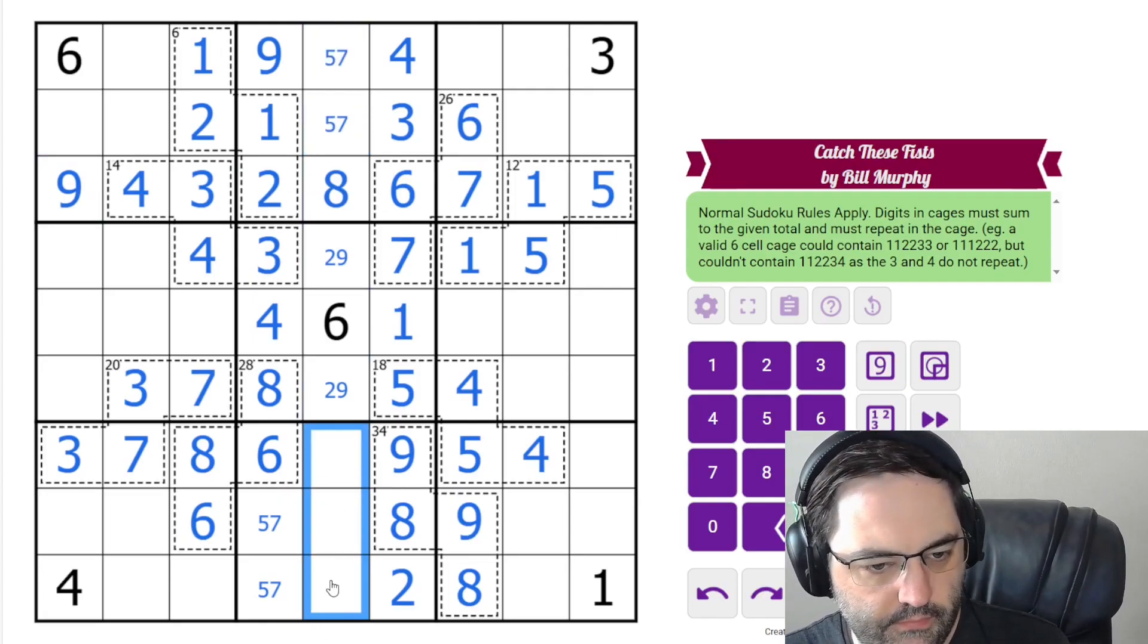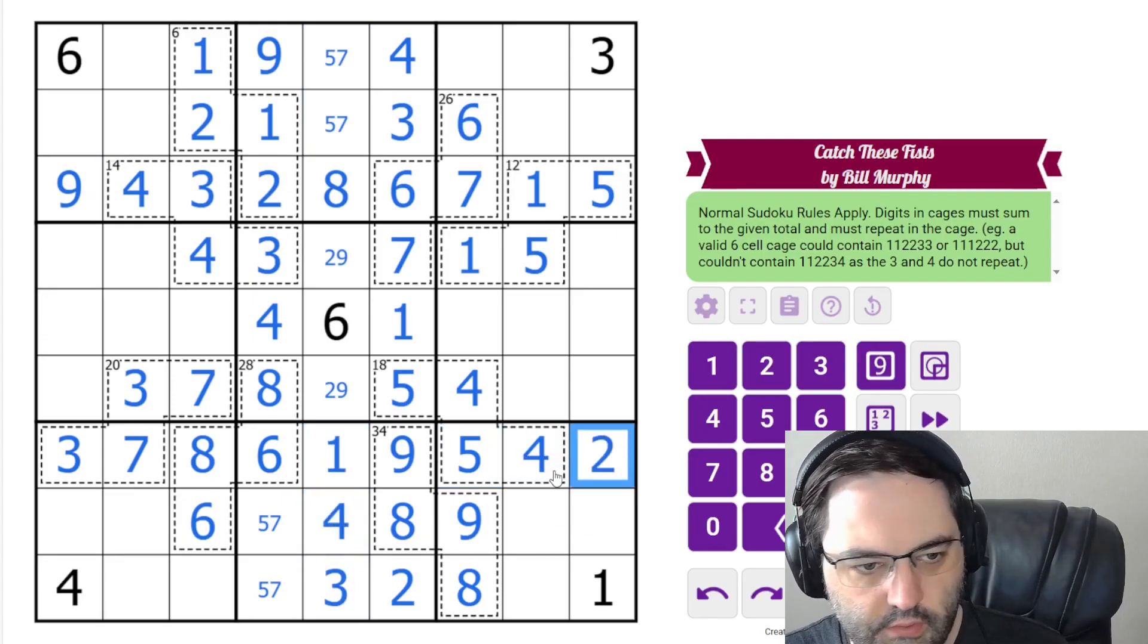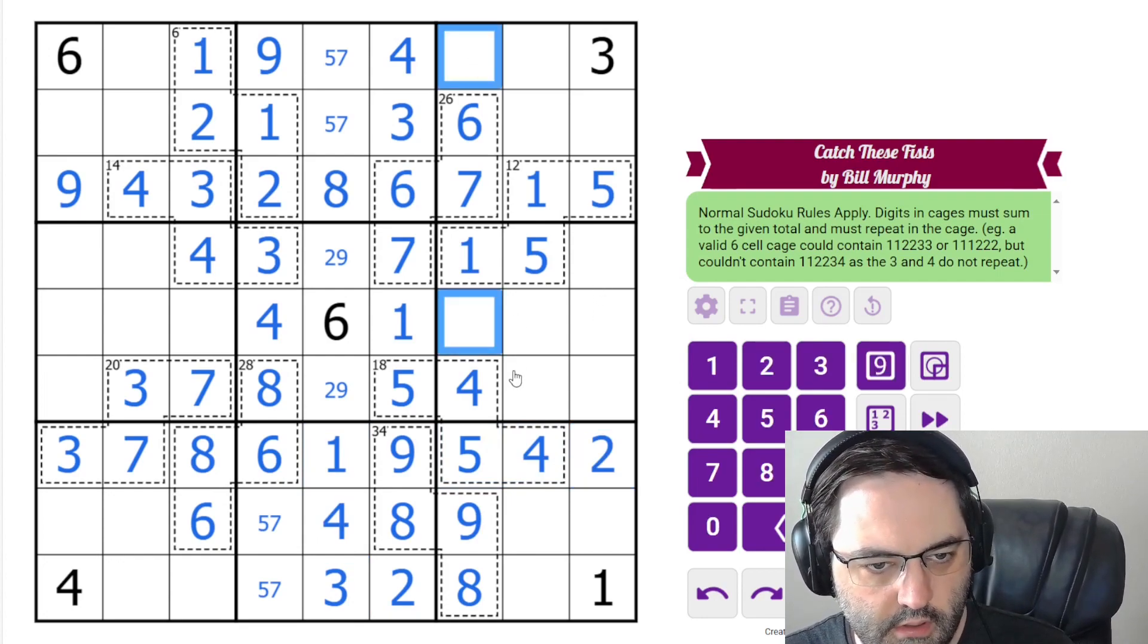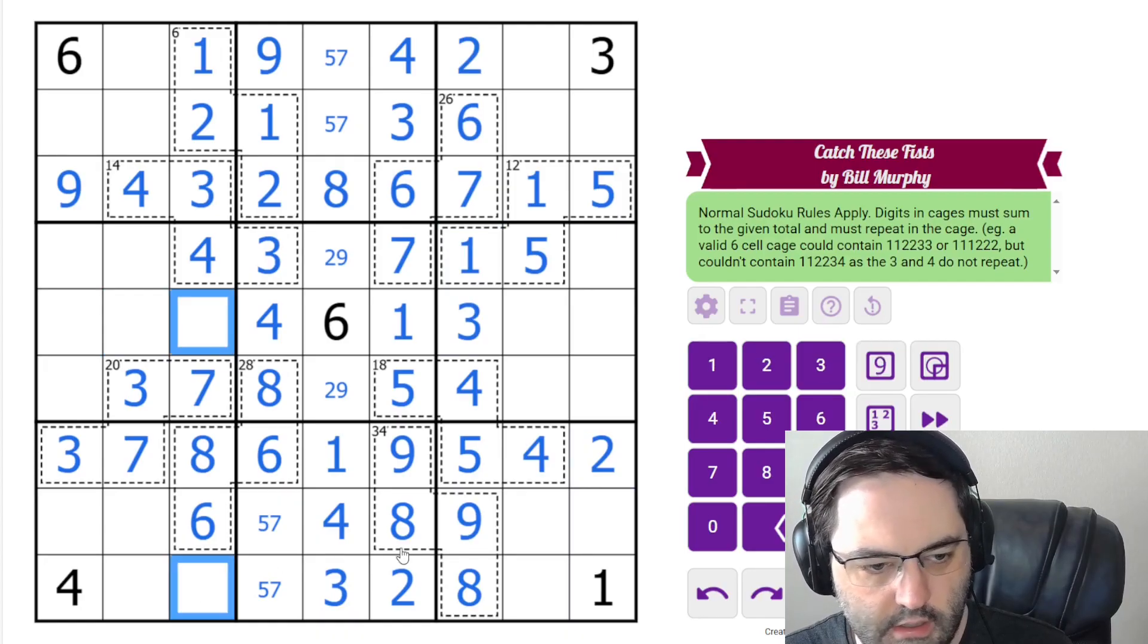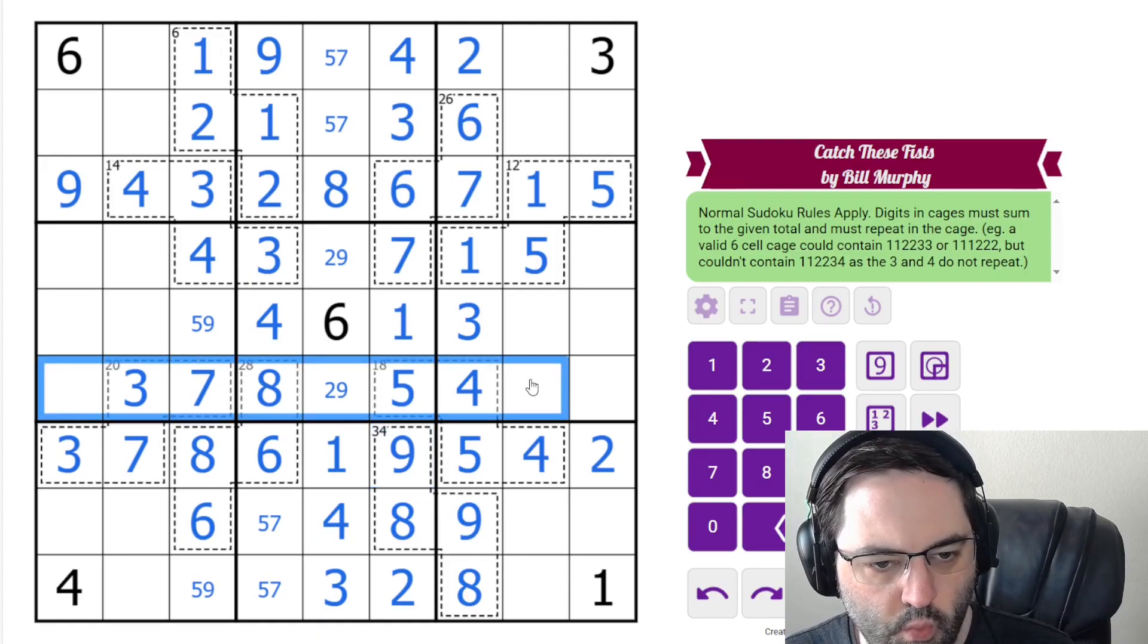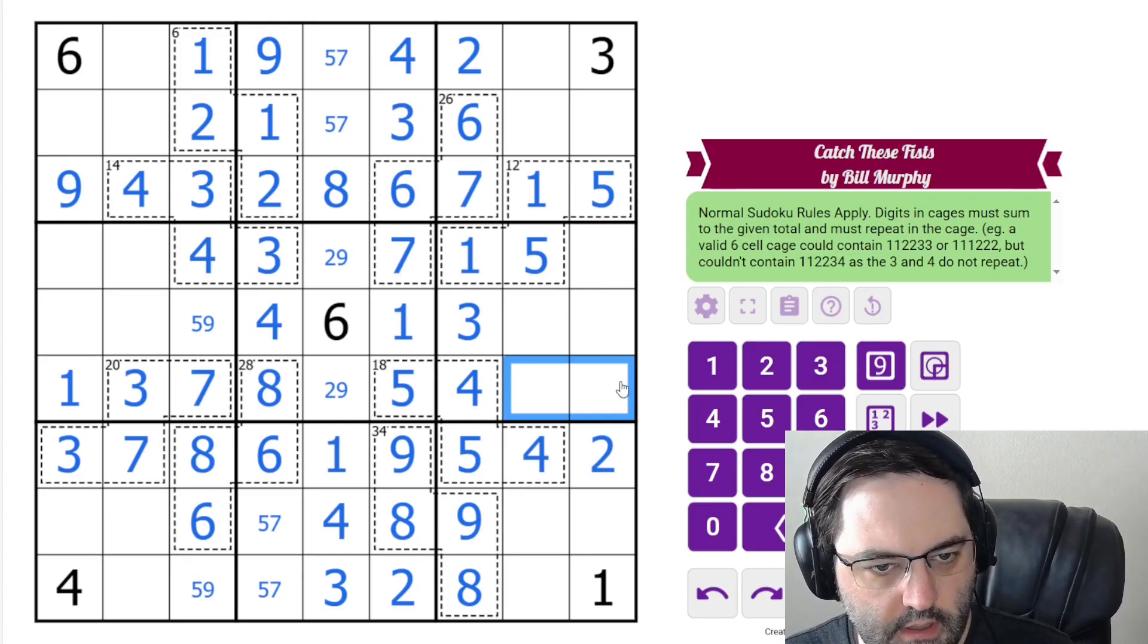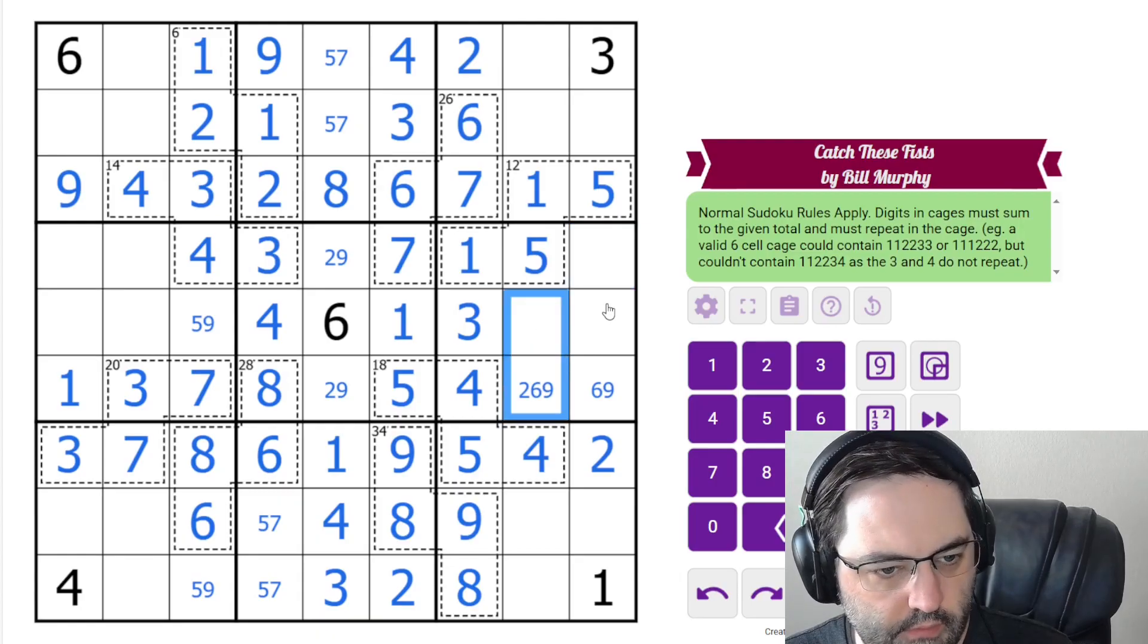These are one, three, four. Three there. There's four there. This is a two. This column needs a two and a three. That's resolved. This column needs a five and nine, which is not resolved yet.